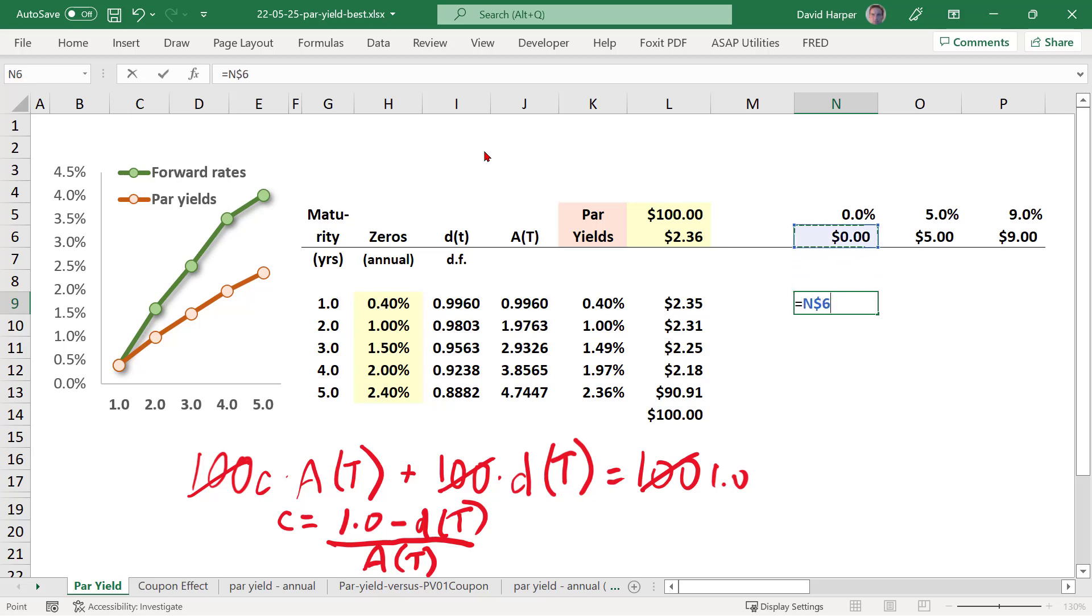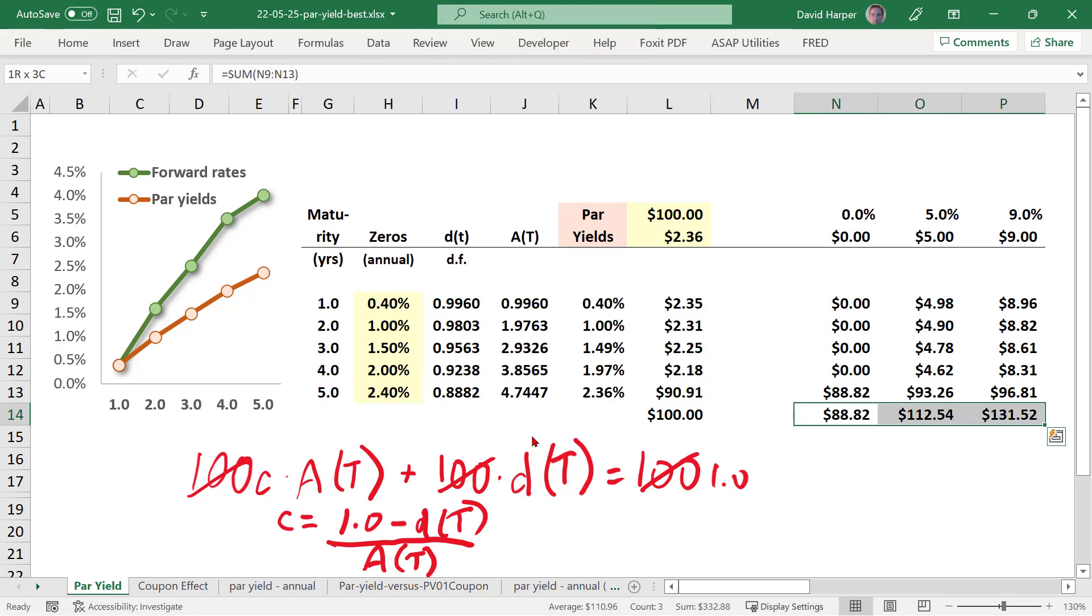And then I'm going to solve for the bond prices as a function of, they're going to all use the same term structure. So I'm going to take the coupon here, anchor that, multiply it by the discount factor, anchor that. And then that should give me the present values of my coupons. And I need to remember to add the final principle here and anchor that. So what I get, and then I'm going to sum these. And what I'm then getting here is three different prices for three different bonds. They all use the same spot rate term structure, but their coupon rate varies. Here we have a zero coupon bond going up to 9%.